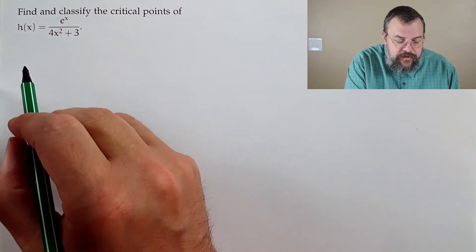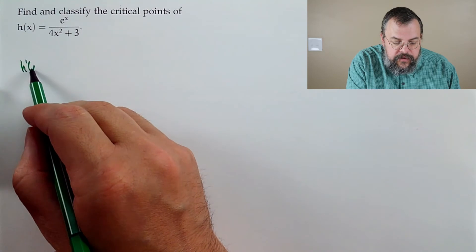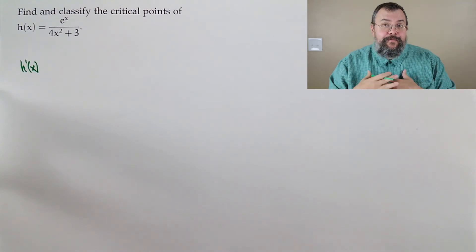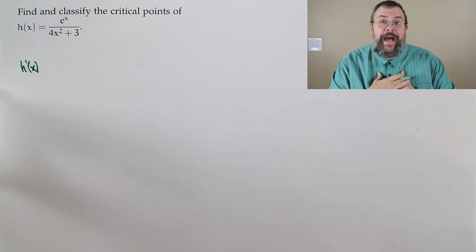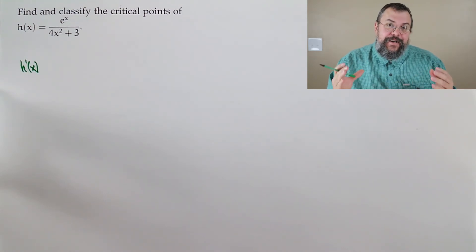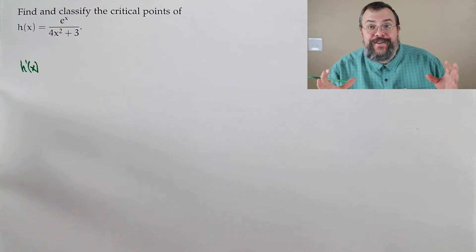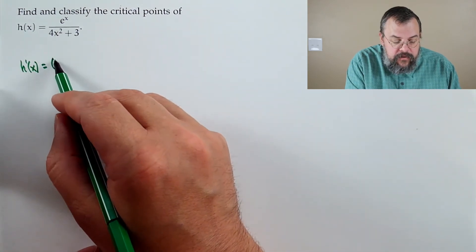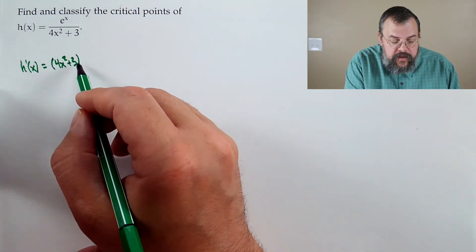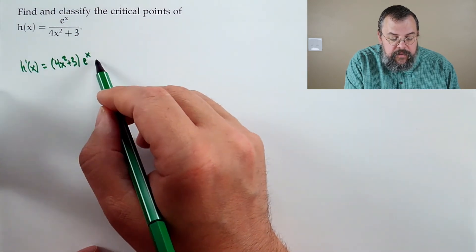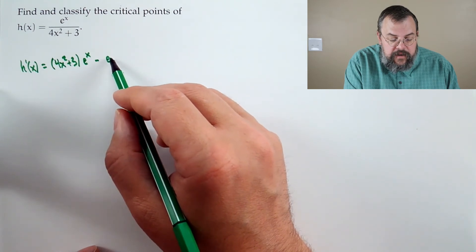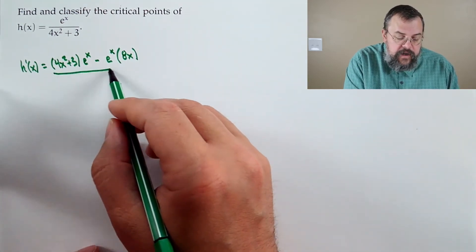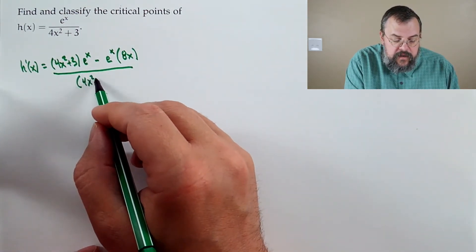Let's take our derivative using the quotient rule. f prime equals the bottom (4x squared plus 3) times the derivative of the top (e to the x), minus the top (e to the x) times the derivative of the bottom (8x), all divided by the bottom squared. Note that the derivative of e to the x is just e to the x.